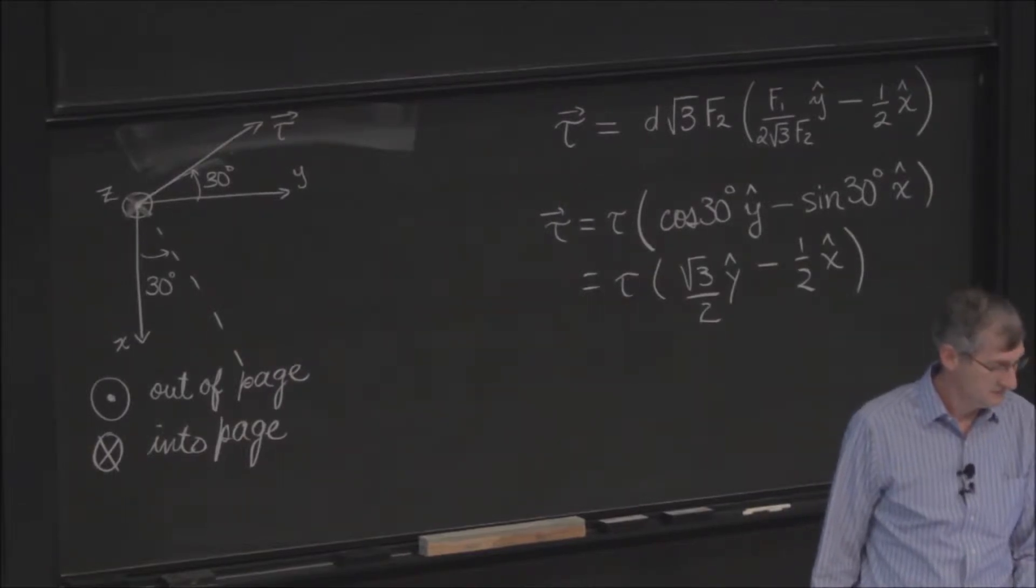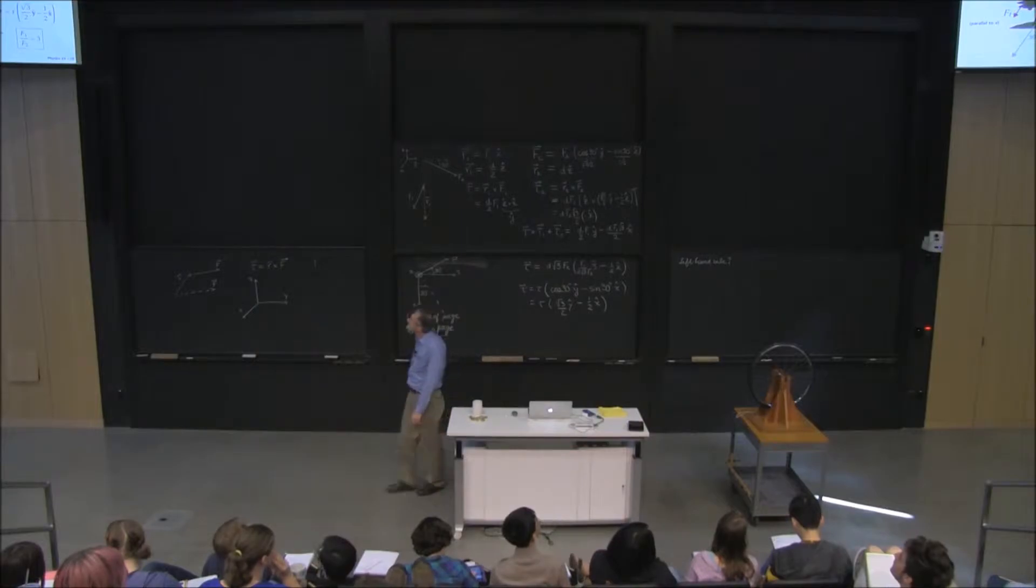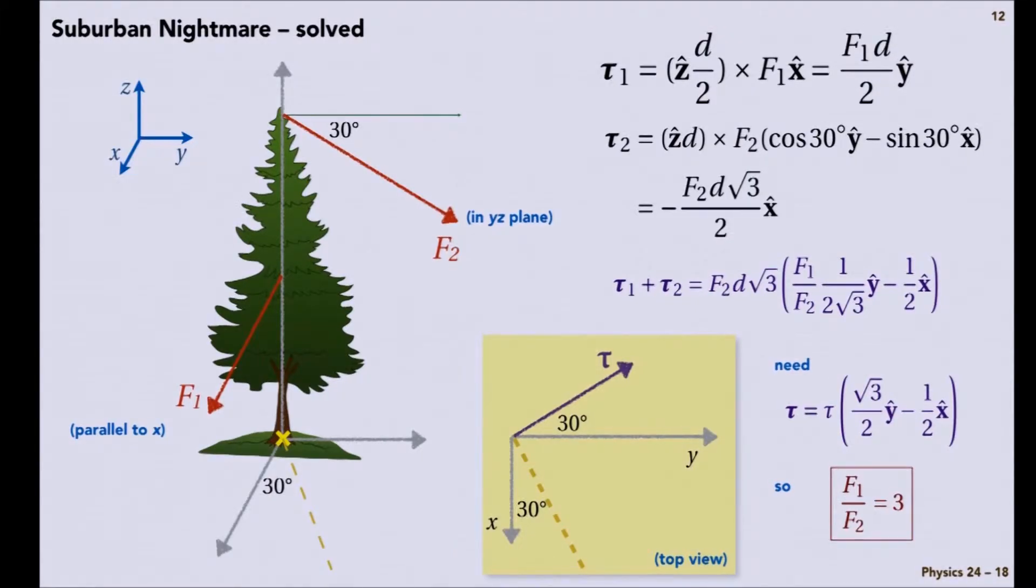Agreed? There, all your work for nothing. OK? So in order to make the tree rotate around an axis that lies this way at 30 degrees from the y-axis, we need to combine the two forces to produce torques about the base of the tree that points in that direction. And that requires the ratio f1 over f2 is 3.